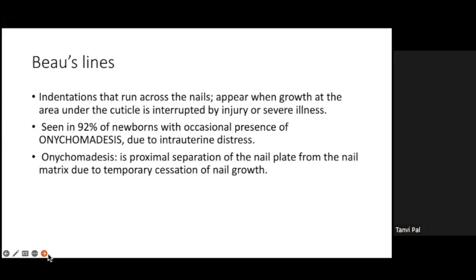Beau's lines are indentations that run across the nails. They appear when the growth under the cuticle at that particular area is interrupted, which could be due to injury, severe illness, or physiologically. In 92 percent of newborns, Beau's lines can be seen due to intrauterine stress. Onychomadesis is a type of proximal separation of the nail plate from the nail matrix, again due to a temporary cessation of nail growth. Beau's lines can lead to onychomadesis.